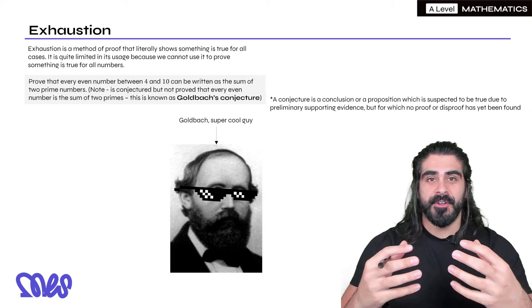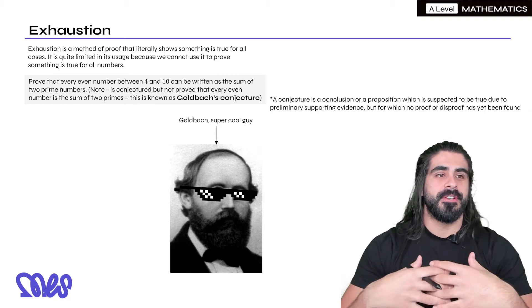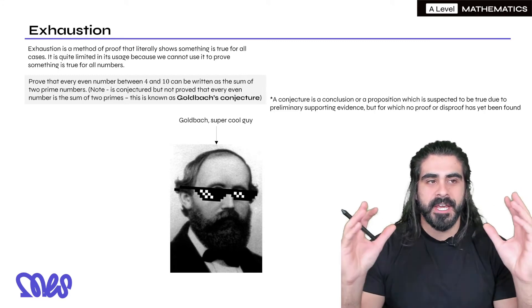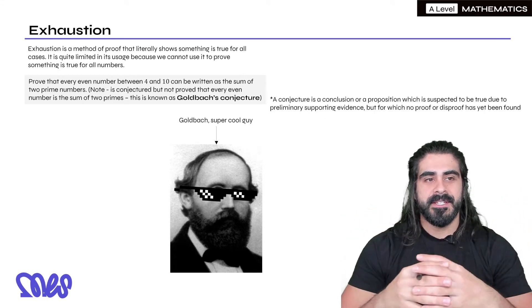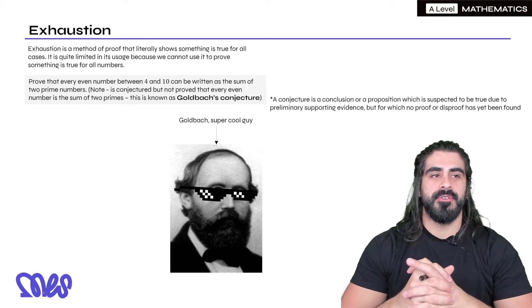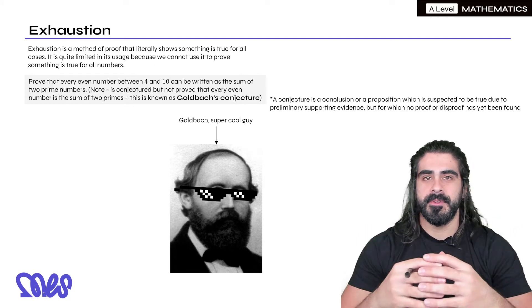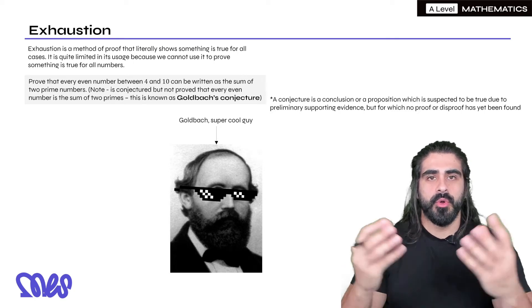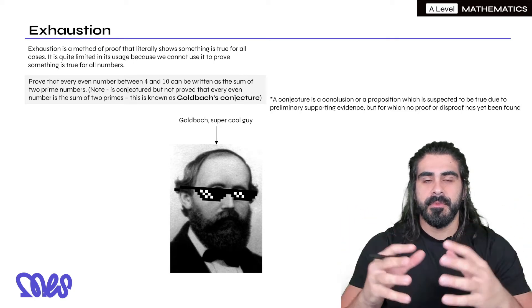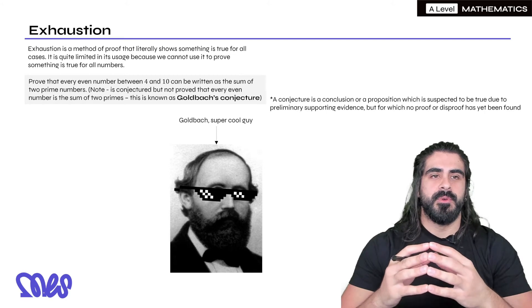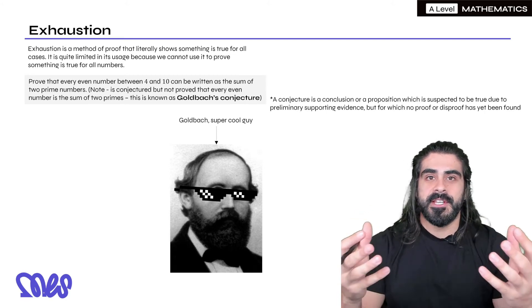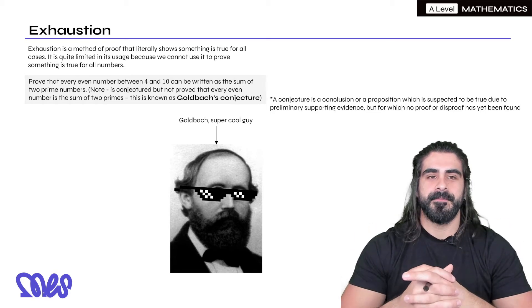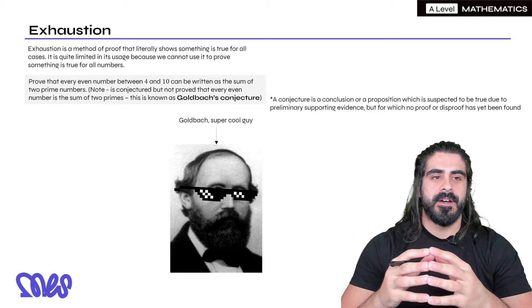So the first one that I'm going to look at is exhaustion. Now exhaustion is a method of proof that literally shows something is true for all cases. Now it's quite limited in its usage because we cannot use it to prove something is true for all numbers because we know numbers are infinite. If I said I wanted to prove something for all the natural numbers, there's an infinite number of natural numbers and we're not going to sit there forever proving it. So it's quite limited with that respect.